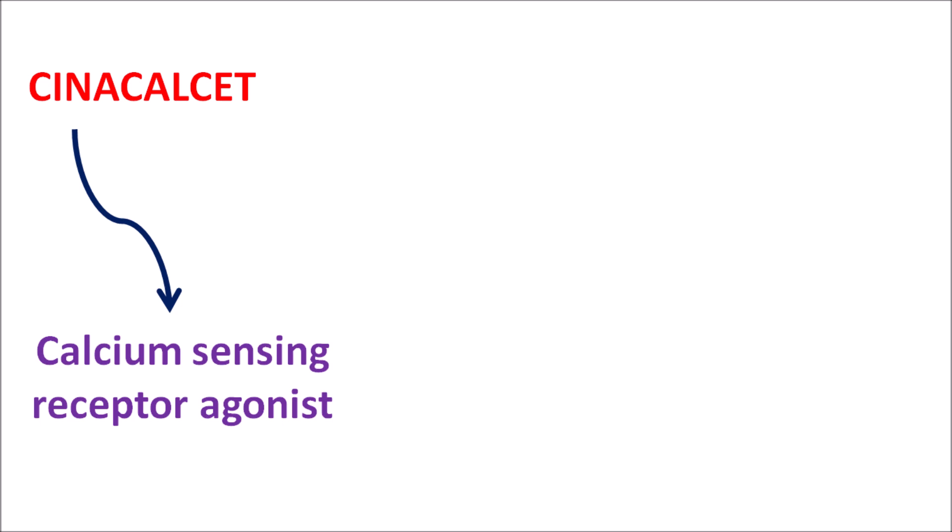Simply put, Cinacalcet acts as a calcimimetic agent. This drug acts like calcium — it can bind to receptors which are highly sensitive to calcium, called calcium-sensing receptors. Cinacalcet can bind to these receptors as an agonist, which increases the binding of even low levels of ionized calcium to these receptors, thereby increasing calcium signaling and controlling the levels of parathyroid hormone.